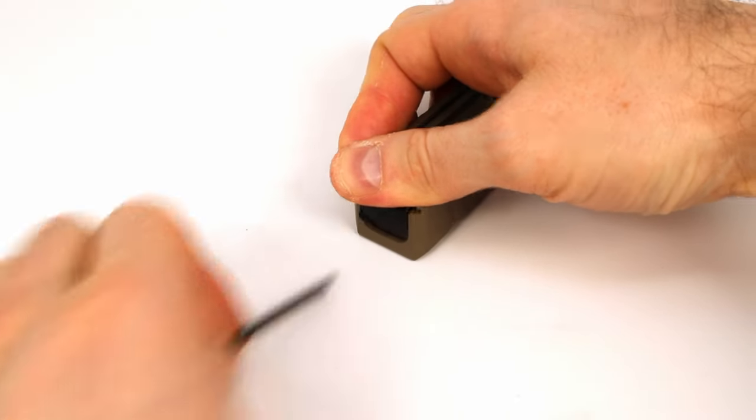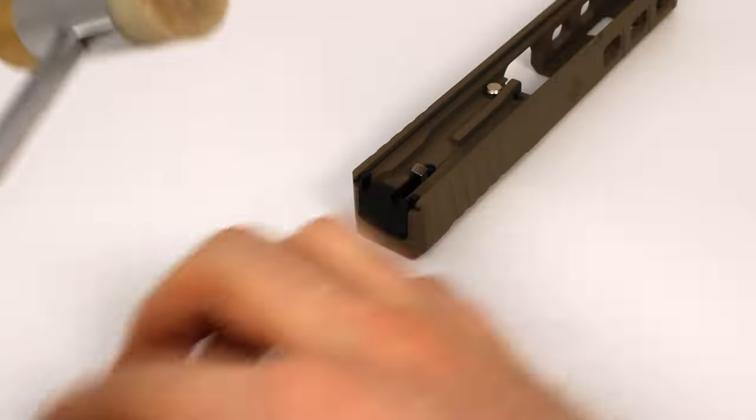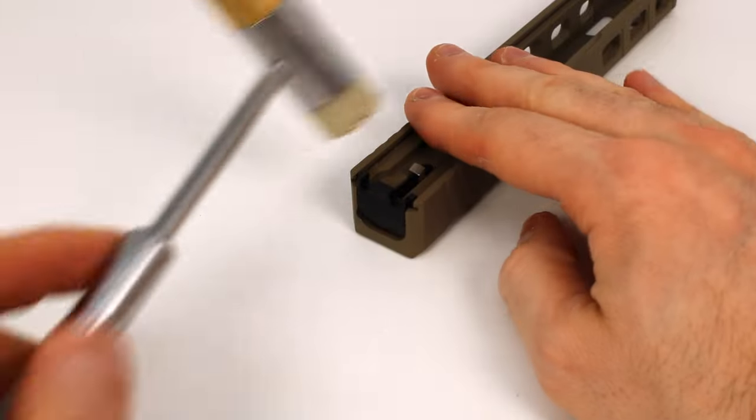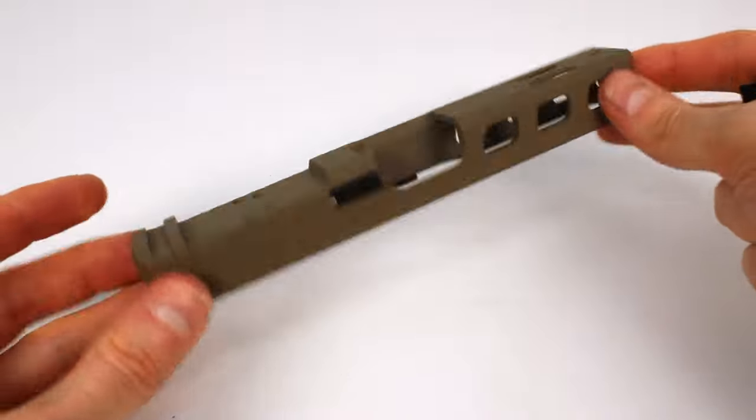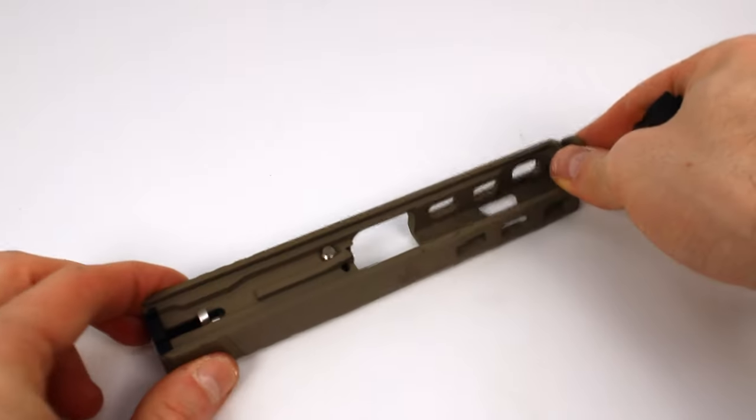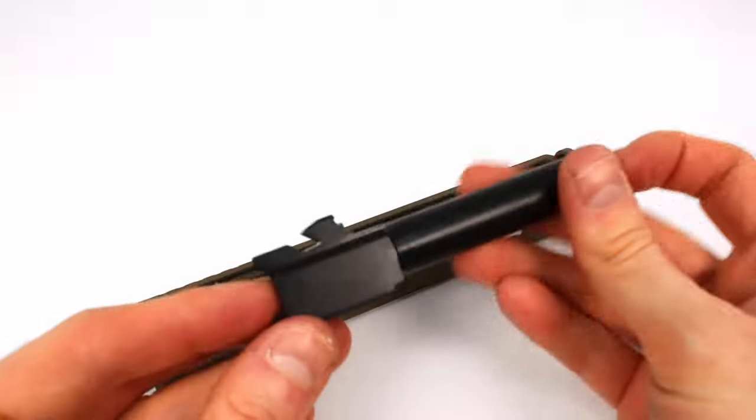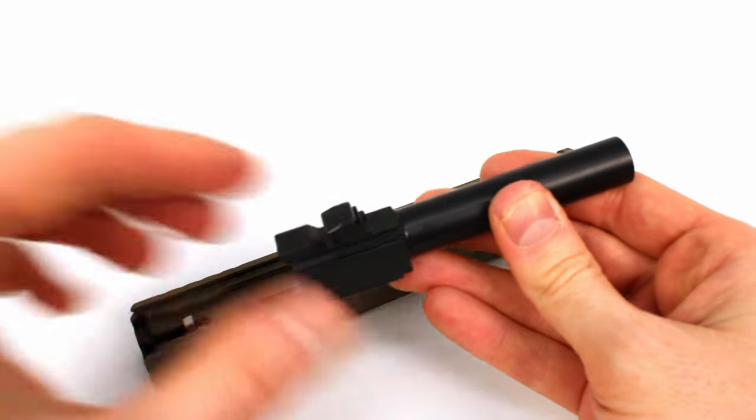So you're all done technically with your slide. You can throw your barrel in now, which is super easy to do. You don't need any tools. Just make sure these lugs are facing up and towards the rear of the slide. Insert the muzzle down into the front of the slide, slide the barrel back all the way like so.